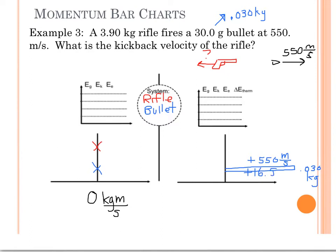And because I know that the momentum of the bullet plus the momentum of the rifle has to add up to 0 kilogram meters per second, I know that the momentum of the rifle has to be negative 16.5 kilogram meters per second.